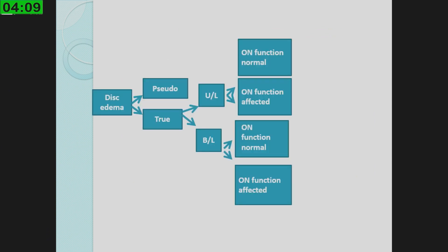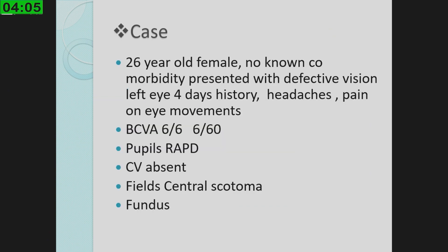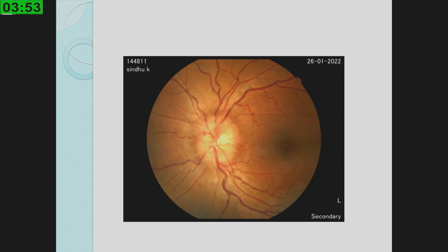Now coming to unilateral disc edema — same protocol: is the optic nerve function affected? Case: 26-year-old female, no known comorbidity, presenting with defective vision for four days, headache, and pain on eye movements. Left eye: 6/60, RAPD, color vision absent, central scotoma on field testing, fundus showed disc edema in one eye, other eye normal. Dilated retinal assessment did not reveal anything new. This turned out to be optic neuritis.